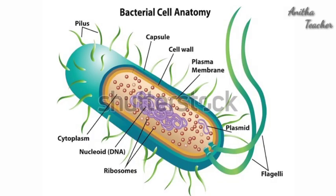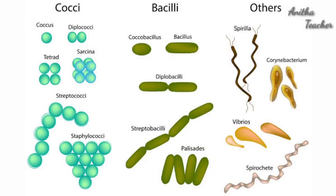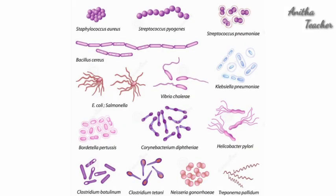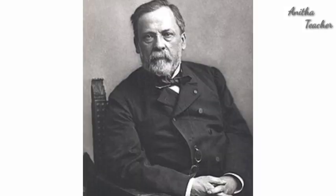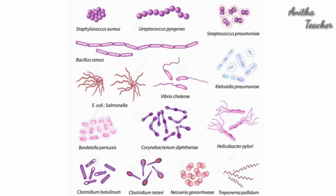Bacteria are among the most abundant organisms on earth. The credit for observation and distribution of bacteria goes to Anton van Leeuwenhoek. Ehrenberg coined the term bacteria. In the 1850s, Louis Pasteur's work showed that bacteria are chemical factors capable of bringing about significant changes in nature. He is regarded as the father of bacteriology. In the 1870s, Koch's experiments established their link to infectious disease — the germ theory of diseases. Due to the efforts of several enthusiastic scientists over the last two centuries, the study of bacteria is now recognized as bacteriology, a new branch of biology.